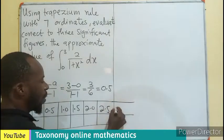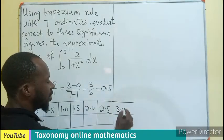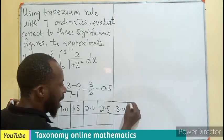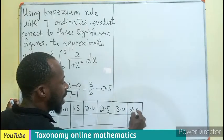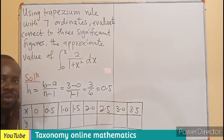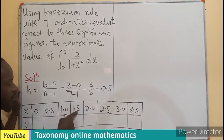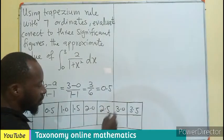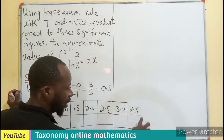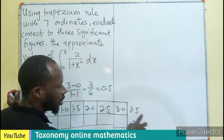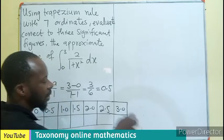If added 2.5, if added I'll have 3.0. Why am I stopping at 3.0? Counting: 1, 2, 3, 4, 5, 6, 7. We said seven ordinates, so we end at 3.0.